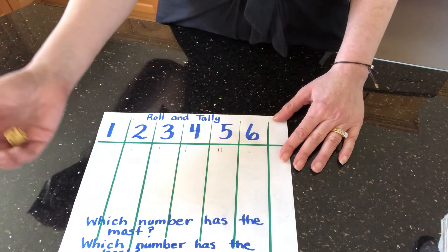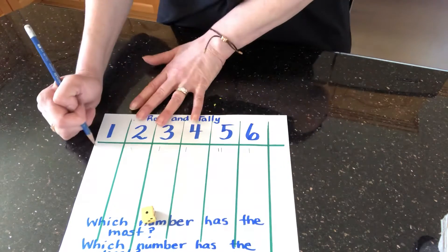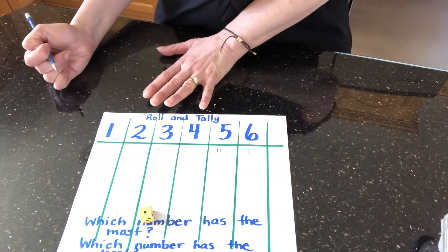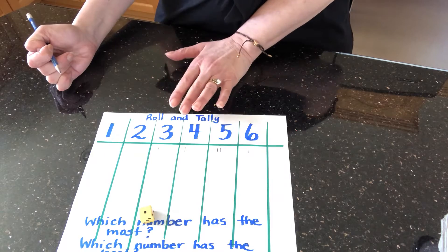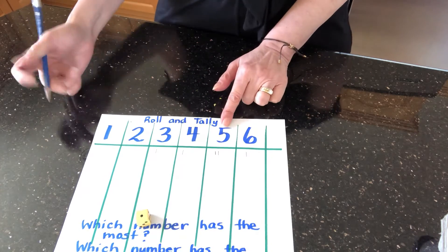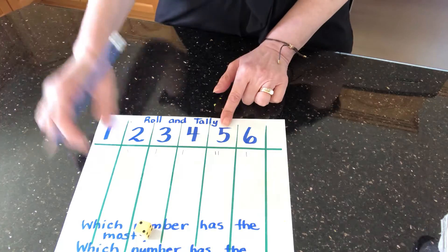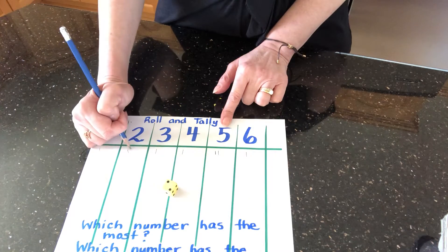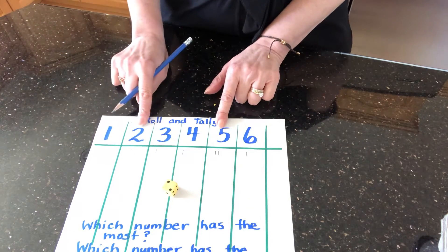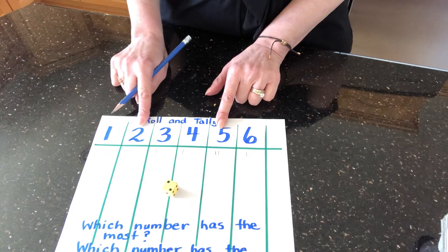Let's keep rolling. Oh, yay! So now everybody has one except for five. Five has two. What number did I get now? Yay! Now two and five are tied with two.